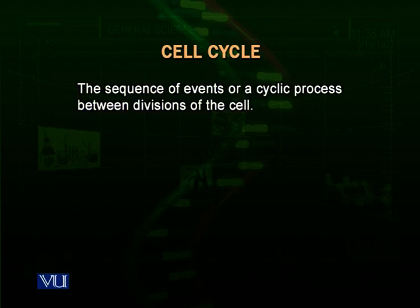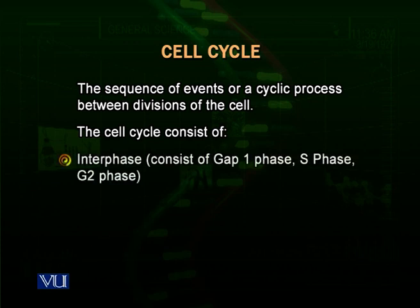What is the whole process of dividing? When cells are produced, for some time they normally perform their function. When they need to divide, they enter a cyclic process called the cell cycle. The cell cycle is the sequence of events by which a cell divides and then goes back to the non-dividing state. The cell cycle consists of two major phases: one is called interphase, which is a very long phase.